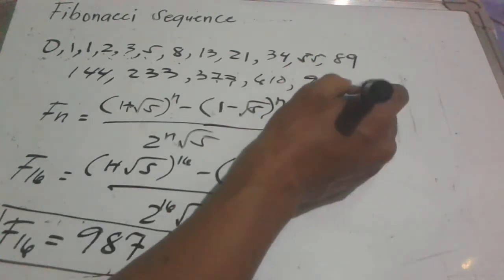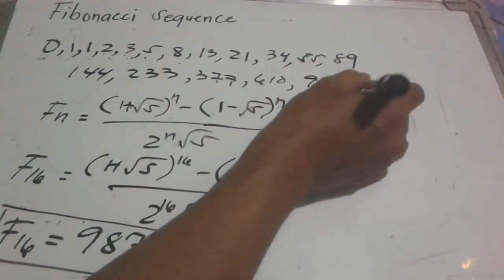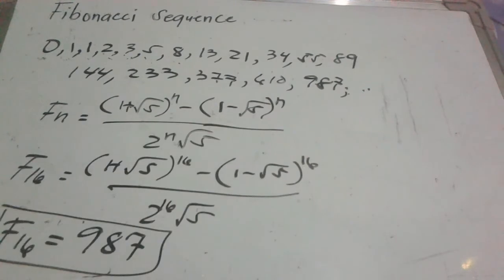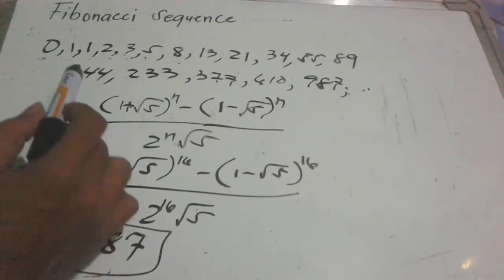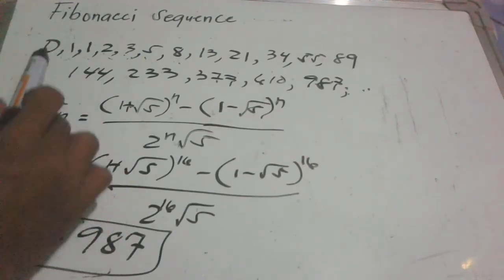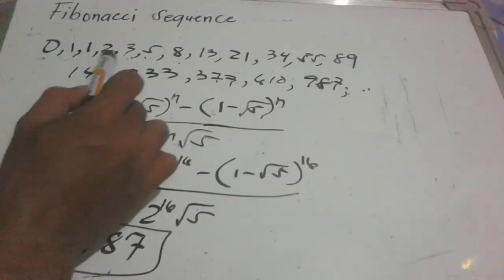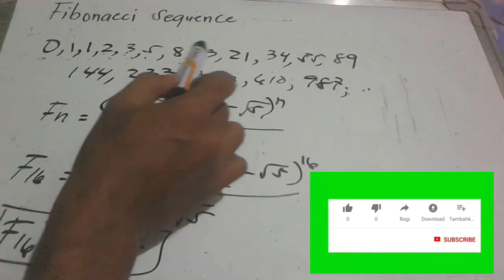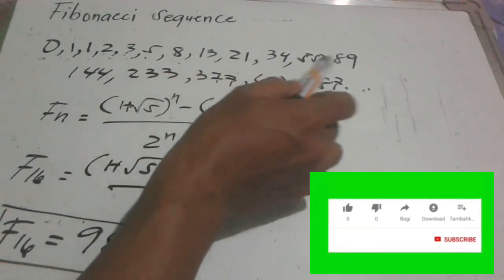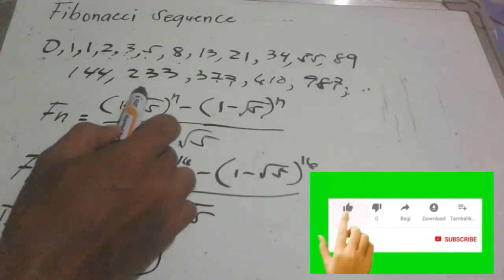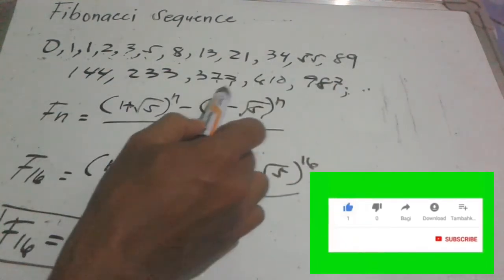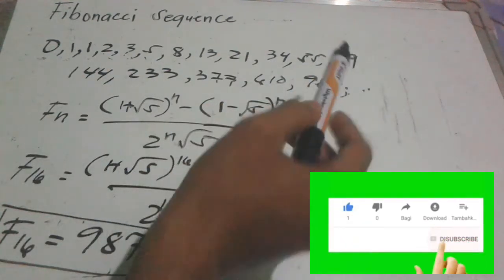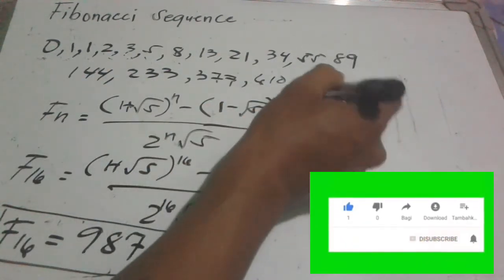Let's check which term number that is. Counting: 0, 1, 2, 3, 4, 5, 6, 7, 8, 9, 10, 11, 13, 14, 15, 16.